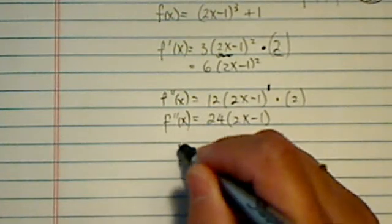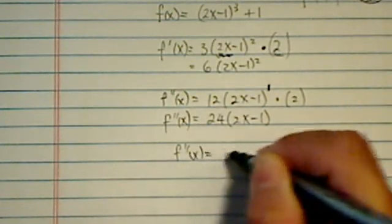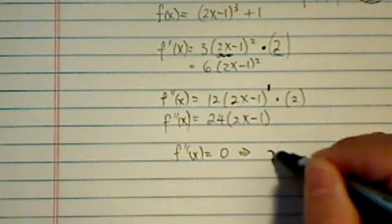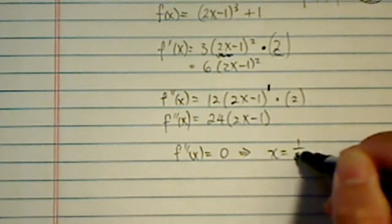Okay, now from here, what we need to do then is set double derivative equal to zero. Find out that x is equal to 1/2.